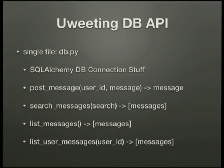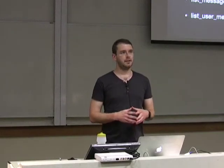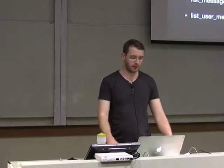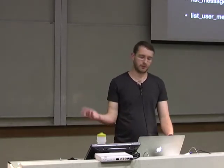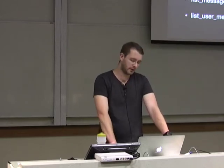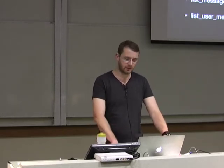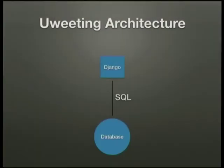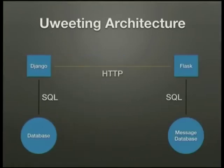To actually retrieve stuff from this database, I created a single file with all the database API stuff in it — called db.py. It has SQLAlchemy connection stuff and ORM definitions for the message, and exposes four functions: one for posting a message, one for searching messages given a search string, one to list all messages in the system, and one to list messages for a specific user. The architecture we're going to have separates this out into the message service on the right, which we talk to over HTTP using Flask.